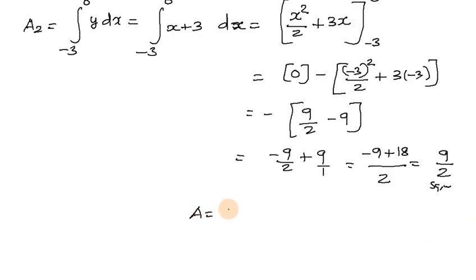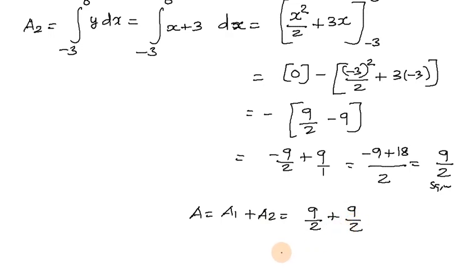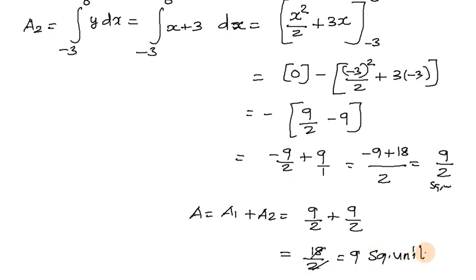Total area equals Area 1 plus Area 2. Area 1 is 9 by 2, Area 2 is 9 by 2. Adding gives 18 by 2, which simplifies to 9 square units. So this is the final answer to the problem.